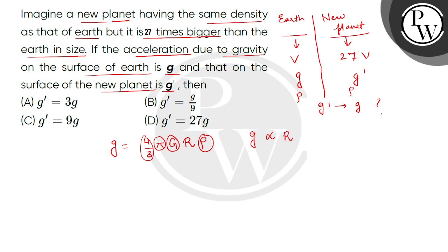Now children, here we have the new planet, its volume is 27 times. So what can we write? The volume of planet divided by the volume of Earth is 27.